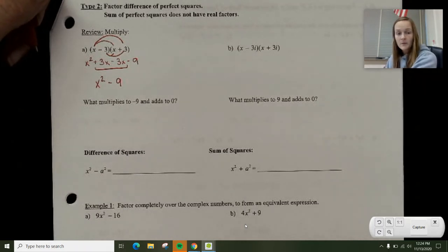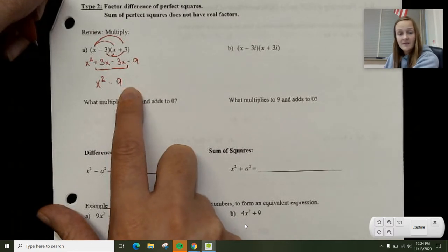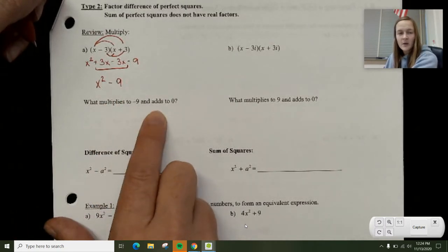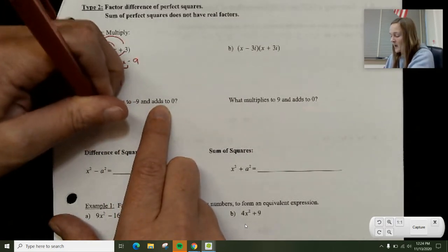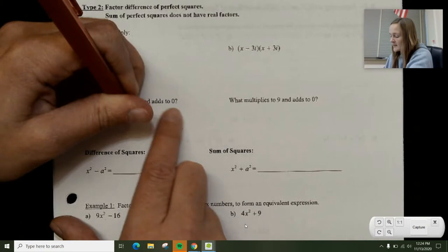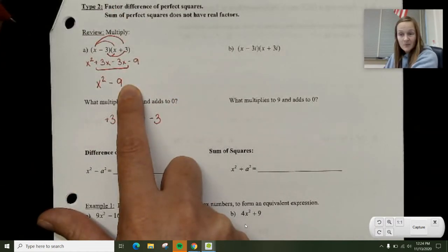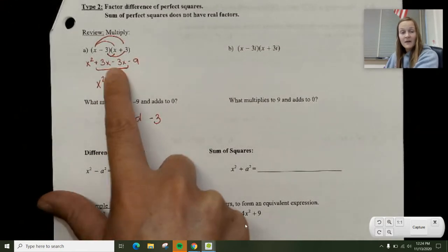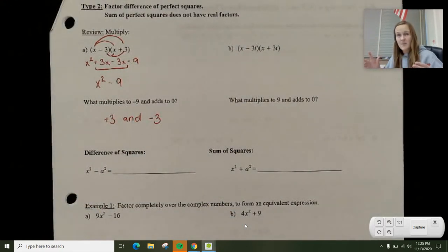When you think about factoring wise, this has a zero term in the middle and you have negative 9 on the outside. So that's where this leading question is going: What multiplies to negative 9 and adds to zero? That would be positive 3 and negative 3. So negative 9 is what you'd multiply by, and then you have the two middle terms which are positive 3 and negative 3.